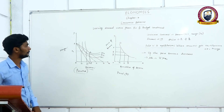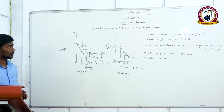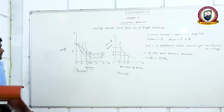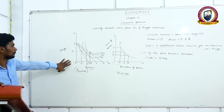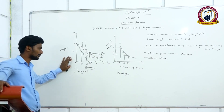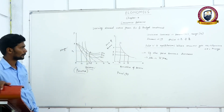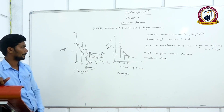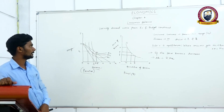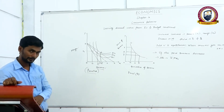So what we discussed: deriving the demand curve from indifference curve and budget constraint. Panel A gives us the equilibrium information, which is used to derive the consumer demand curve in Panel B. If you have any queries regarding this concept, message me on WhatsApp. Thank you.